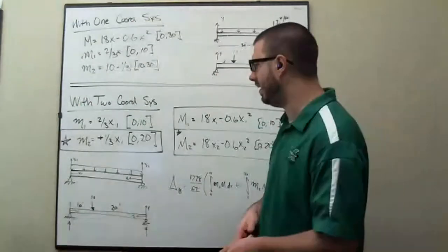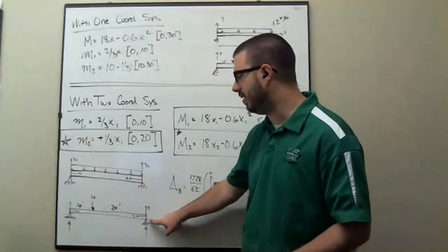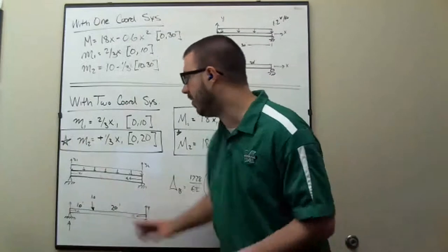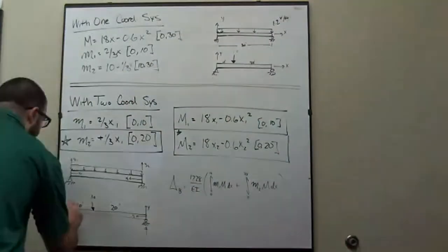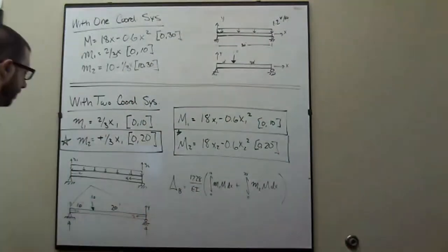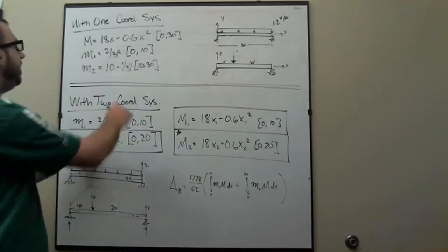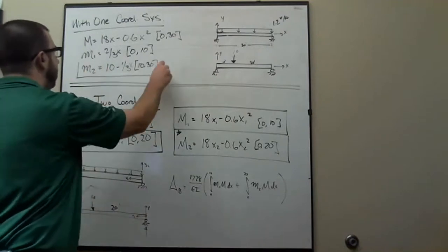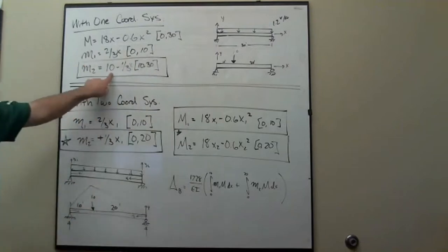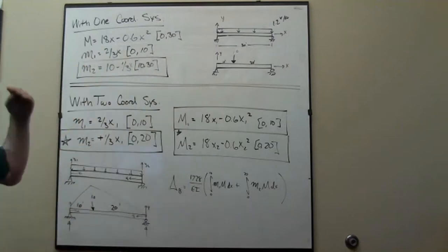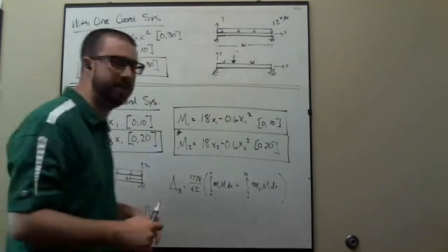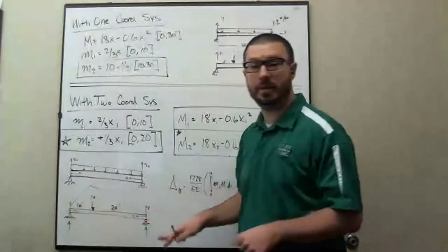The reason why is because if I use this coordinate system for the moment diagram on this side, keep in mind again, the moment diagram is going to come up and go down like that. If I use this coordinate system for this function, then instead of 10, instead of that pesky little 10 there, the 10 disappears because according to that coordinate system, the moment function goes through the origin.